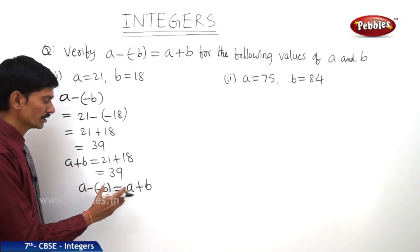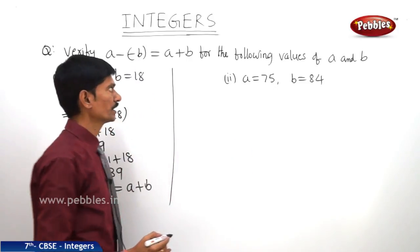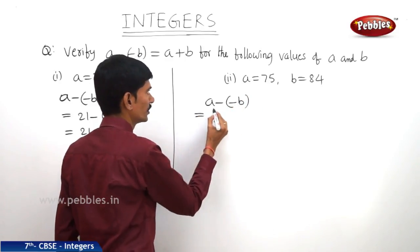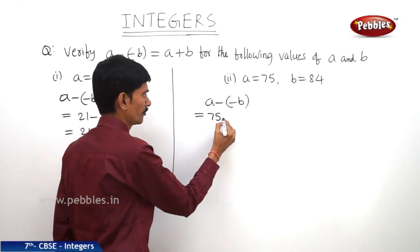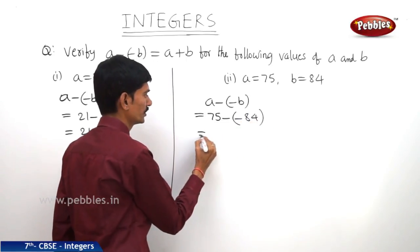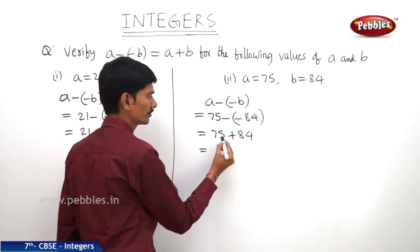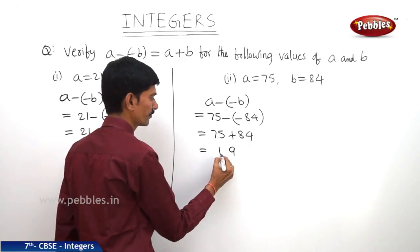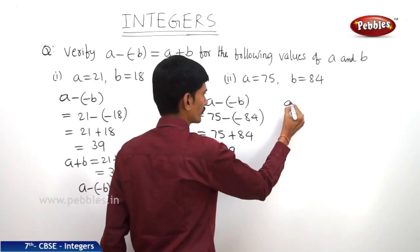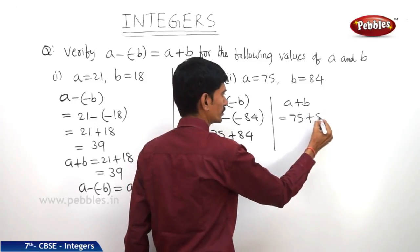And in the second problem, a equals 75 and b equals 84. First we will take LHS: a minus (minus b) equals 75 minus (minus 84). This equals 75 plus 84, which is 159. And when you take RHS, a plus b equals 75 plus 84, which also equals 159.